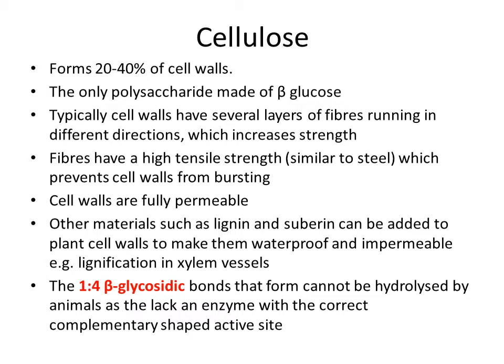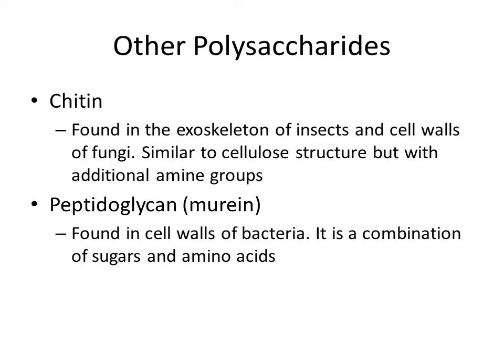The glycosidic bonds in cellulose cannot be hydrolysed by animals because they lack the enzyme with the correct complementary-shaped active site, making cellulose an indigestible material. Other polysaccharides worth being vaguely aware of include chitin, found in insect exoskeletons and fungal cell walls, which is similar to cellulose but has additional amine groups. Peptidoglycan, also known as murein, is found in bacterial cell walls and is a combination of sugars and amino acids — not the same as plant cell walls but still contains a polysaccharide. These are worth knowing because exam questions may apply your understanding of polysaccharides to unfamiliar situations.